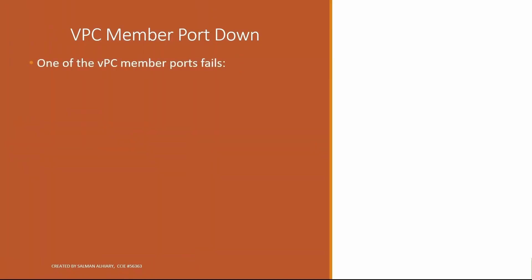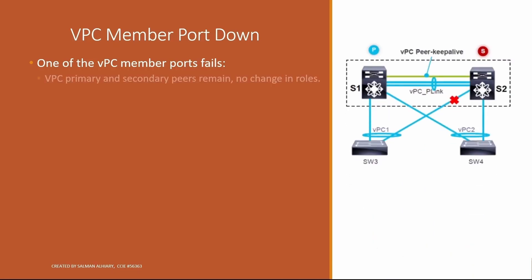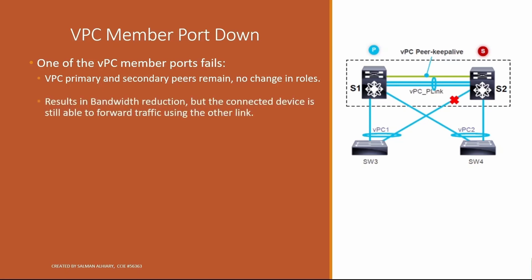When one of the VPC member ports fails, the VPC primary and secondary peers remain with no change in roles — the primary stays primary and secondary stays secondary. This results in bandwidth reduction, but the connected device is still able to forward traffic using the other link. Here, switch 3 lost the connection with switch 2 but still has a connection to switch 1 in order to forward its traffic.